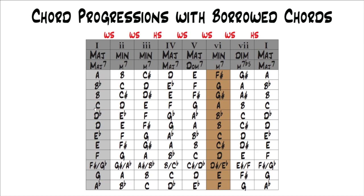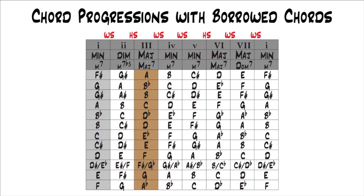C major is spelled out C, D, E, F, G, A, B, C. If you were to make the sixth the new key center — which is the relative minor — that's A. Then you would spell it out A, B, C, D, E, F, G back to A. So all you've done is started on A and went from there. You should know that already if you've gone through these lessons. That's relative minor.